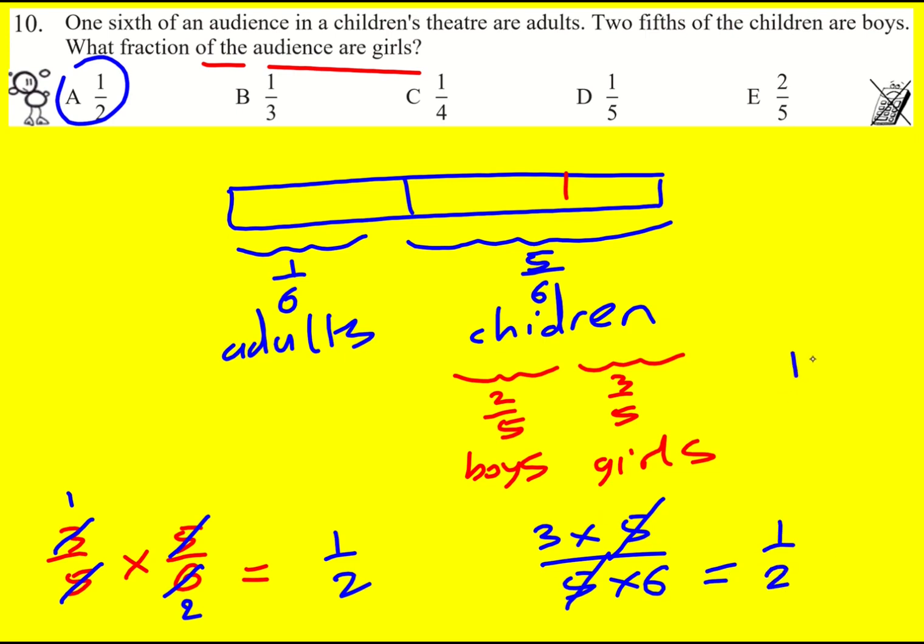Of course, if you really want, you could work it out, fifteen over thirty, and then cancel it down, but overall we've got our answer of half. Thank you.